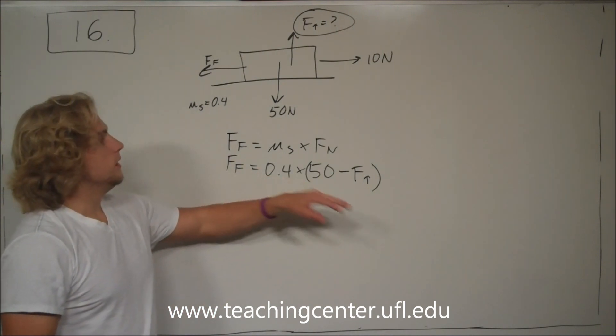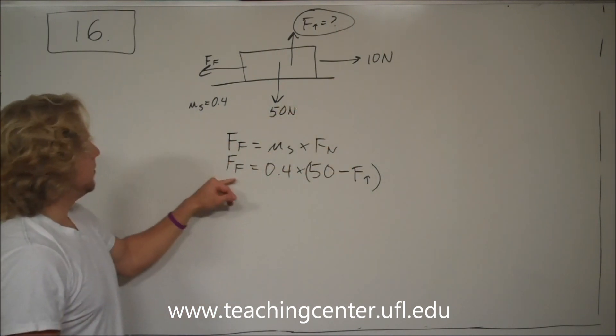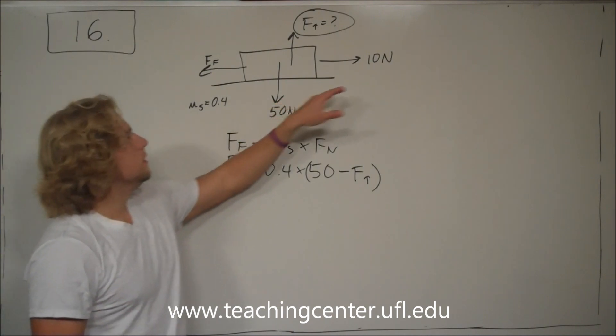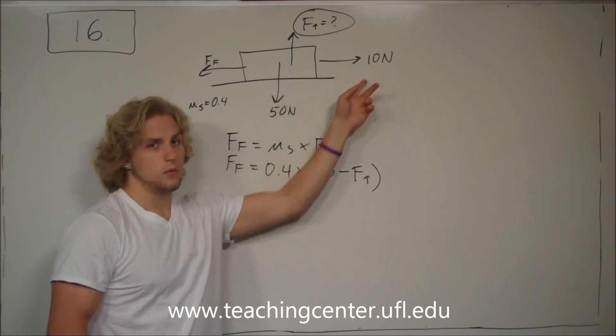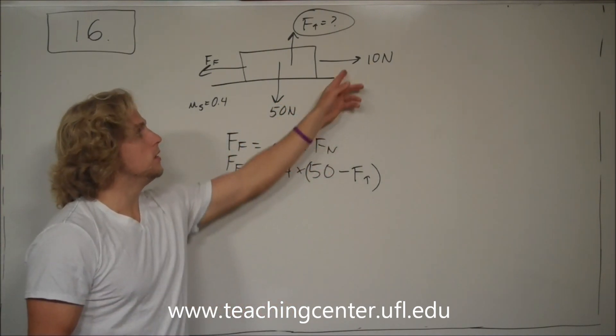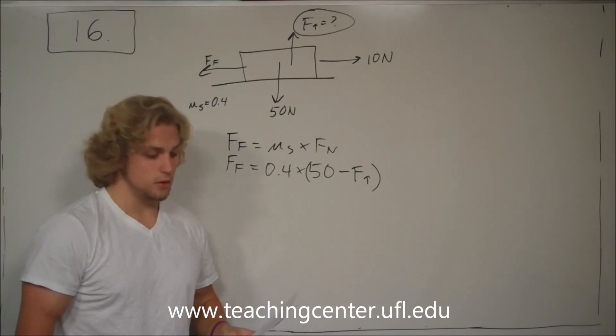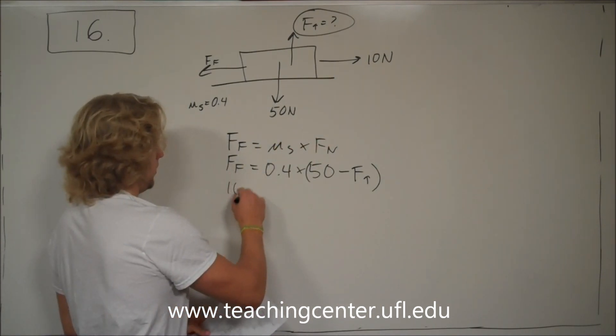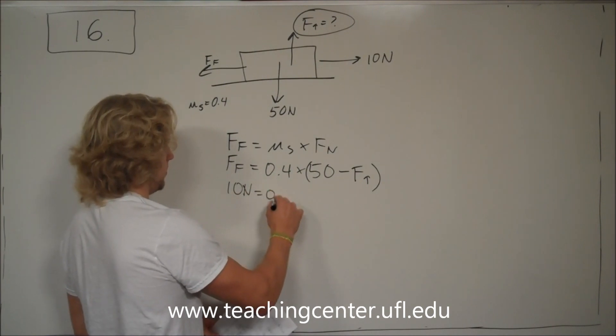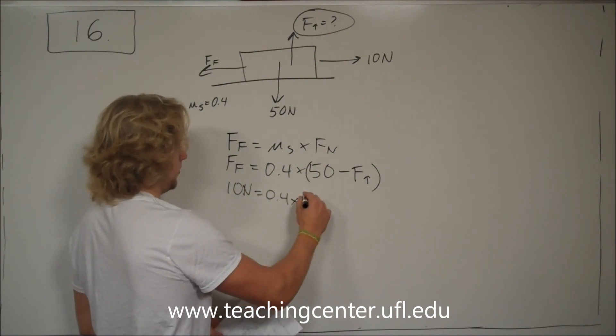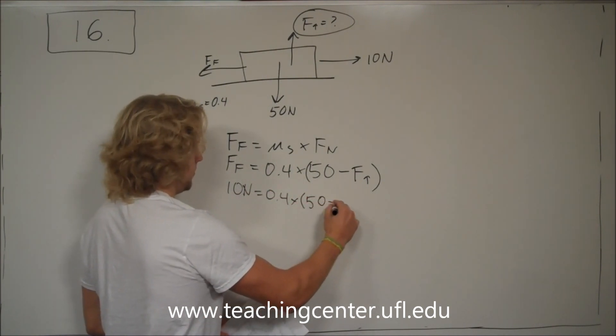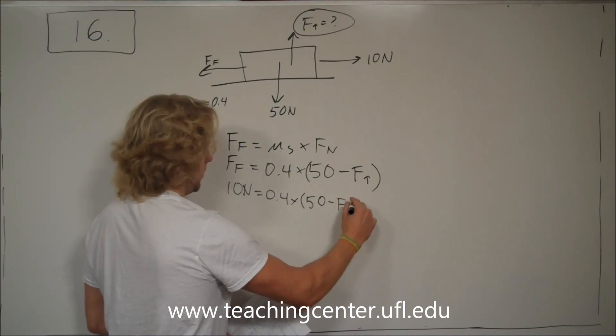So to get it to move, we have to get this frictional force down to 10 newtons, so that this person moving it can actually move it. So that means that we can plug in 10 newtons is equal to 0.4 times 50 minus f up.